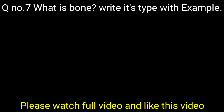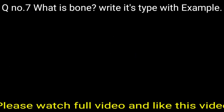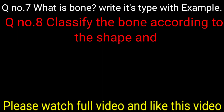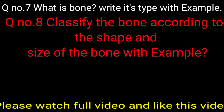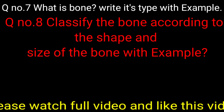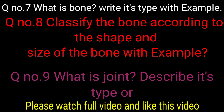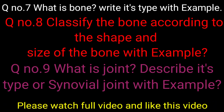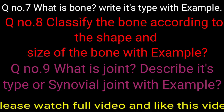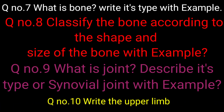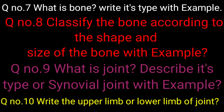Question number seven: what is bone? Write its types with example. Question number eight: classify the bone according to shape and size of the bone with example. Question number nine: what is a joint? Describe its types or signs of all joints with example. Question number ten: write the upper limb or lower limb joints.